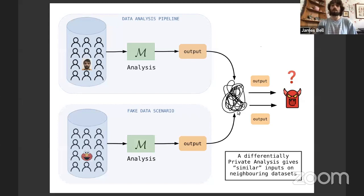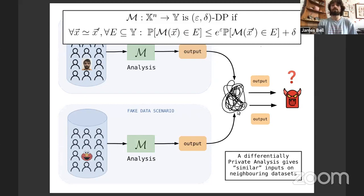If these two outputs were indistinguishable, that would mean that nothing about me was being learned. Now unfortunately, if they're indistinguishable for every pair of replacements, then no one's contributing any information and we can't learn anything from the output — that's too much to ask. Differential privacy instead says the outputs must satisfy an equation where the likelihood ratio of being in one scenario rather than the other is bounded by e to the epsilon, with a plus delta term that is cryptographically small.